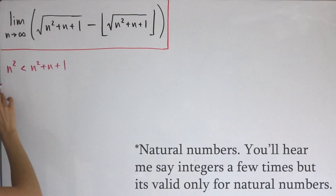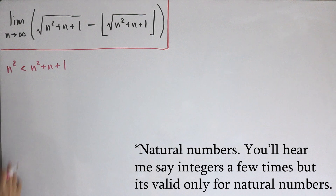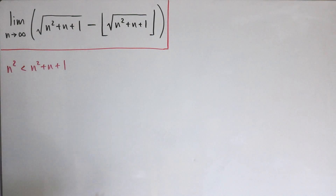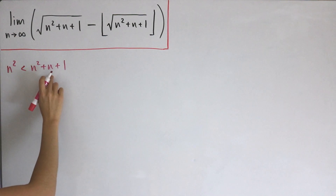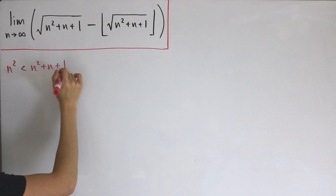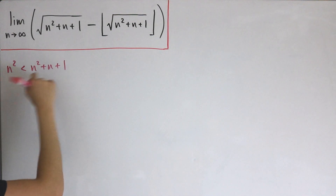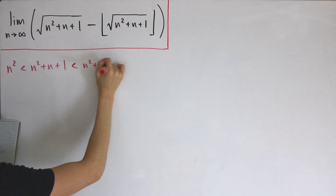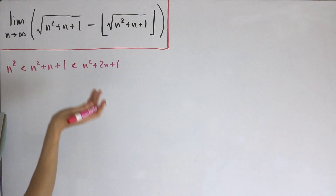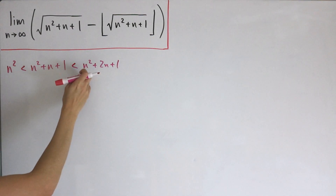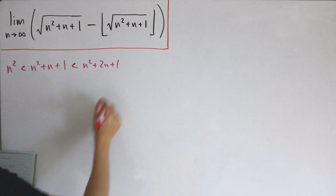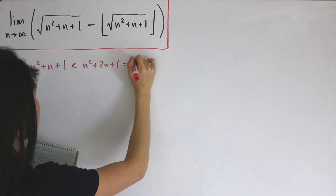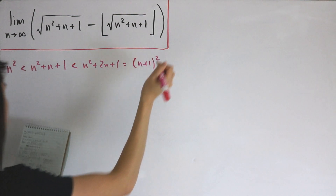For integers, if we plug in anything for n, n squared is clearly less than n squared plus n plus 1. So in this compound inequality, we'll also add that this is less than n squared plus 2n plus 1. Notice that n squared plus 2n plus 1 can be factored as the binomial n plus 1, quantity squared.